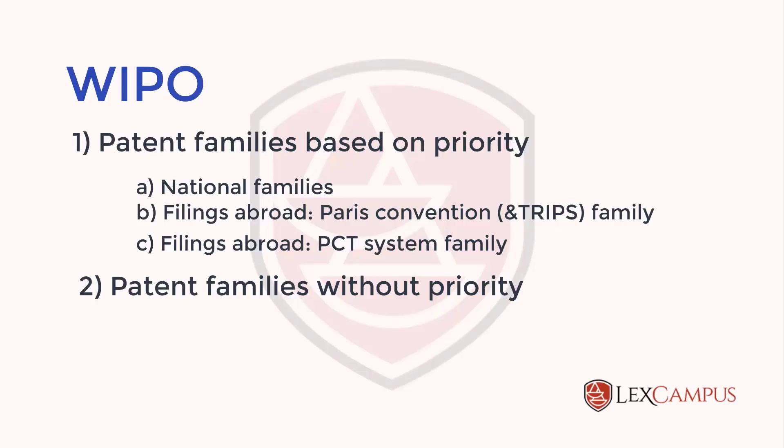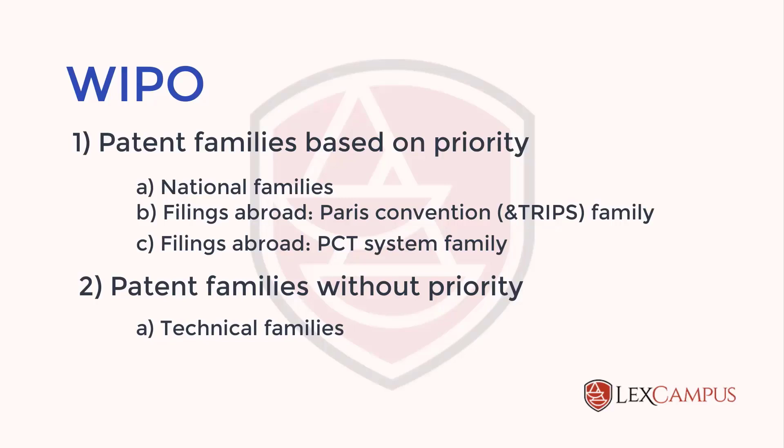These are all priority families because they all share the same or a common priority. Non-priority families — families without priority — are called technical families. These involve improvements over an invention. Note that a patent of addition is still a priority family because the priority remains the same. A technical family, however, is where there are minor improvements that themselves stand as separate applications — a group of inventions emerging from one main technical disclosure but each having their own different priority. This is the classification of patent families.